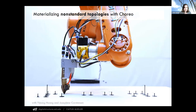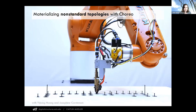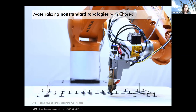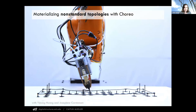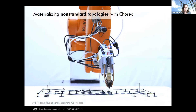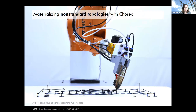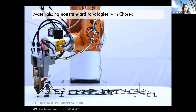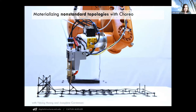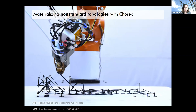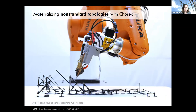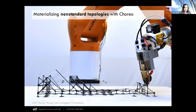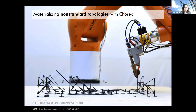Another way that we're trying to do this is by looking at the planning processes for these materialization machines themselves. For example, we're building a topology optimized beam or truss structure that spans, and we have an algorithm that automatically plans the fabrication process.